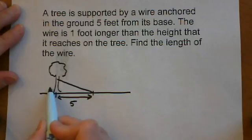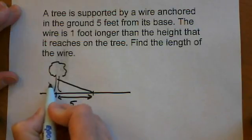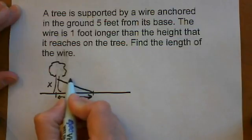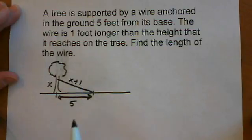We're told the wire is 1 foot longer than the height it reaches on the tree. We're not told anything about the height. Usually the dimension you have the least information about is the one to give the variable to. So let's give the height the variable x. The wire is 1 foot longer, so it's x plus 1.